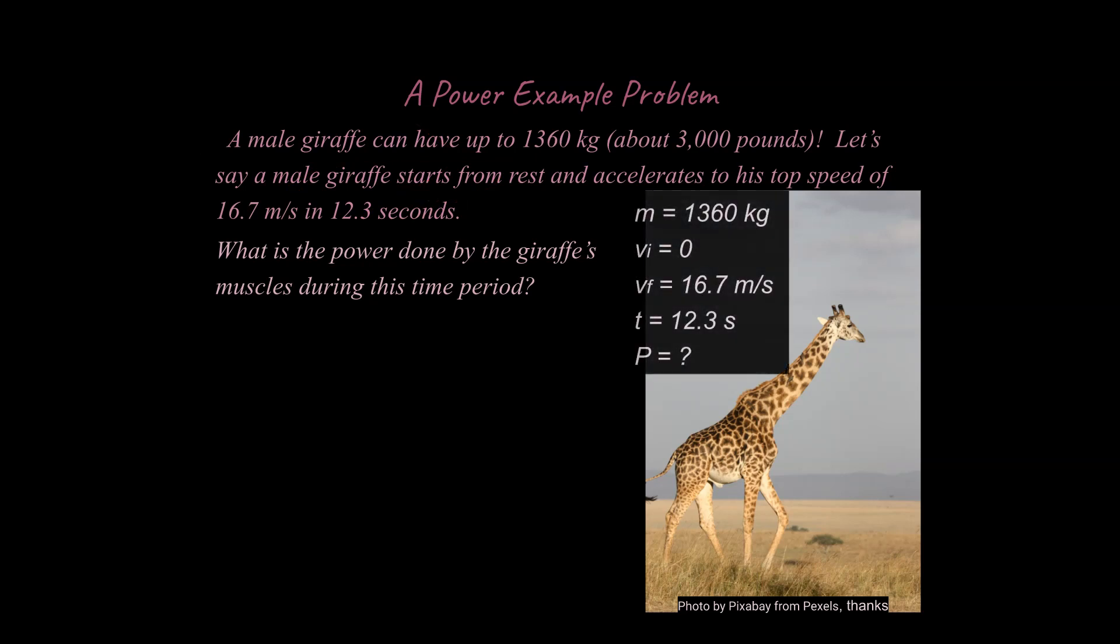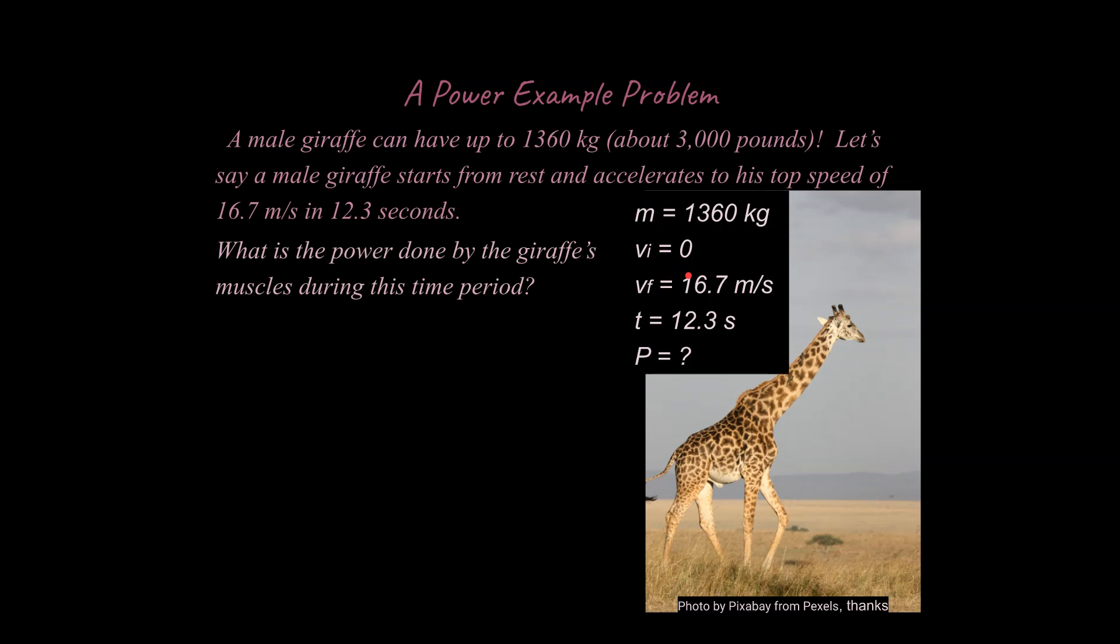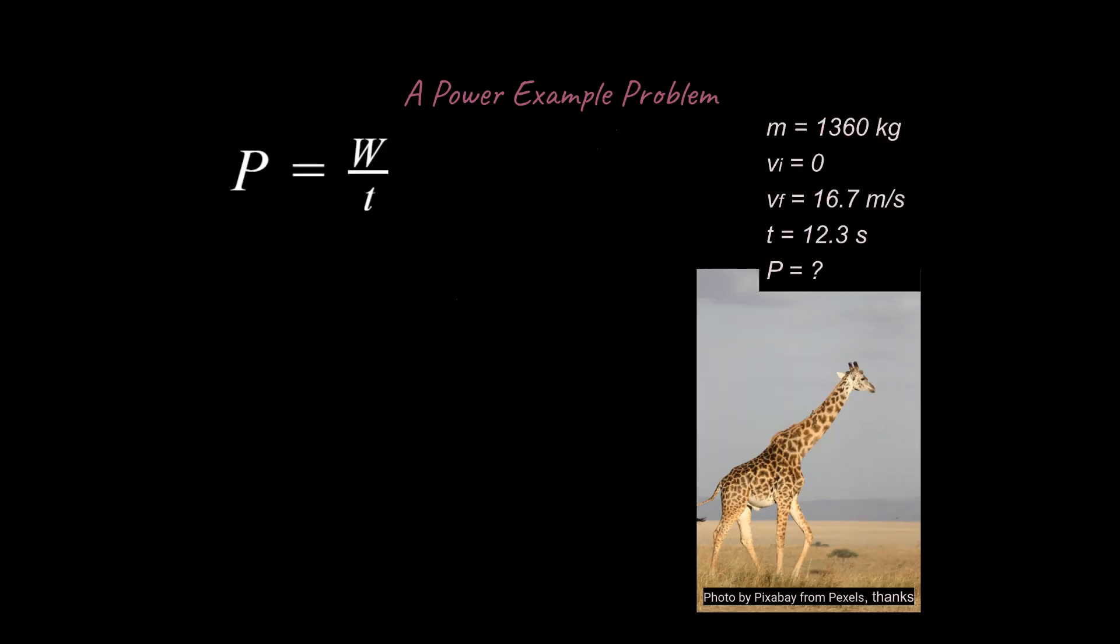Just like any other physics problem, we're going to start by writing down what this word problem means in terms of physics variables. I've listed out what we know: we know the mass, our initial velocity is zero, our final velocity is given, we know the time, and we're looking for power. This is just a quick and easy way of keeping track of what's going on in this problem. I will say it's not really necessary to draw a diagram, although many problems, if not most problems in physics, you should be drawing a diagram for.